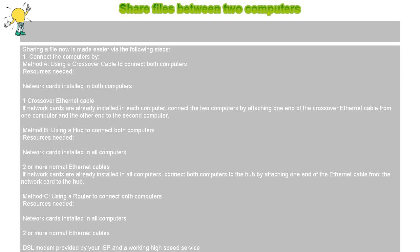Method C: Using a router to connect both computers. Resources needed: network cards installed in all computers, two or more normal Ethernet cables, a DSL modem provided by your ISP, a working high-speed service, and a router — either wireless or wired — that is bridged to the cable modem. If network cards are already installed, connect both computers to the router by attaching one end of the Ethernet cable from the network card to the router. Once done, connect to your high-speed Internet service using your router's GUI, usually by entering 192.168.1.1 on the address bar of your Internet browser.